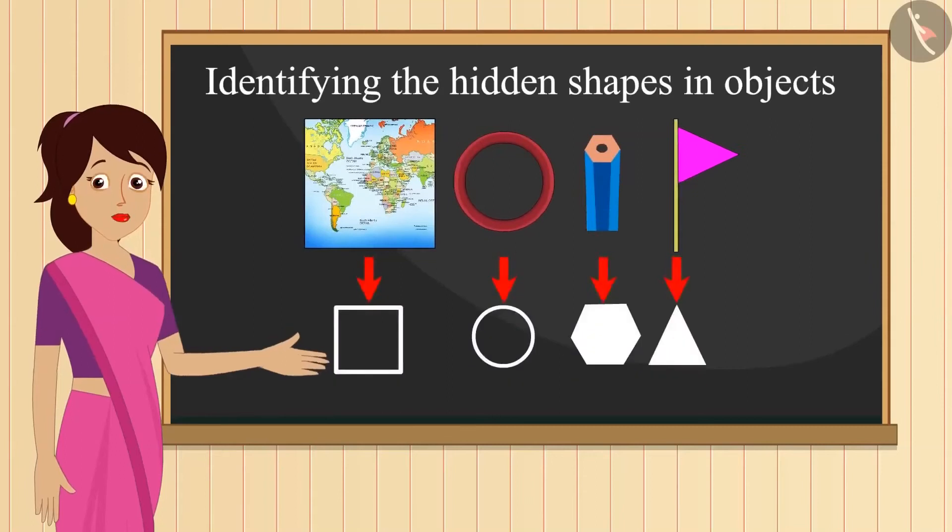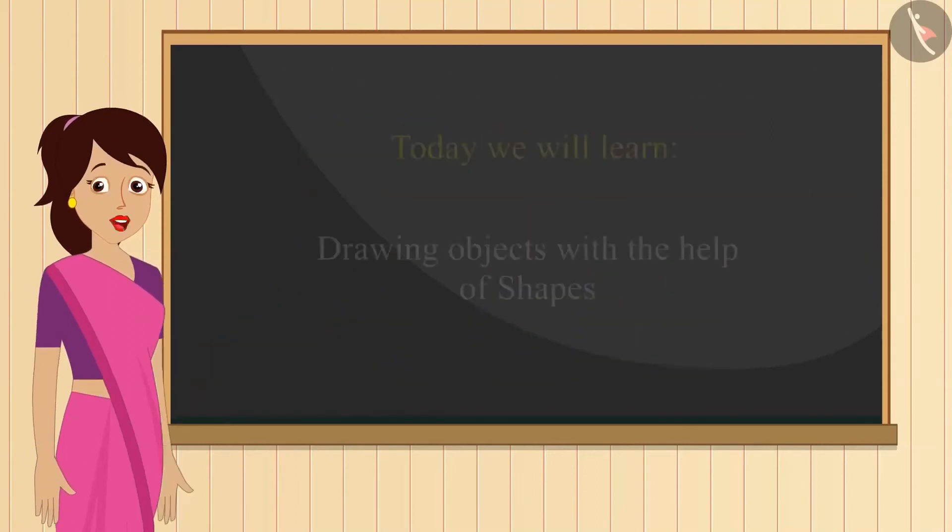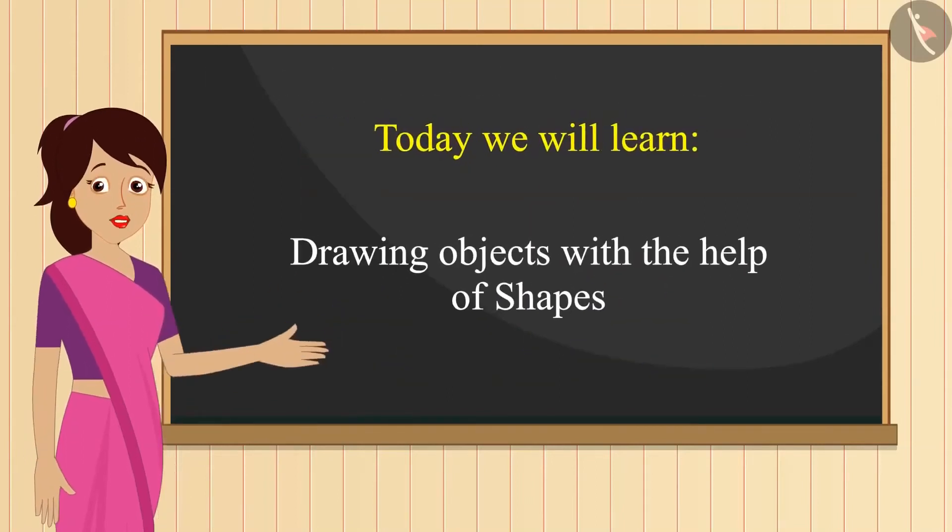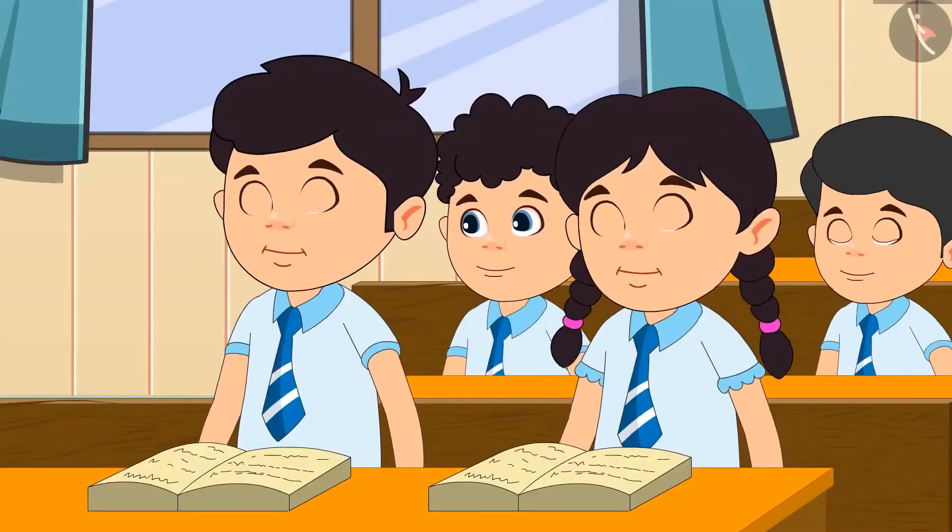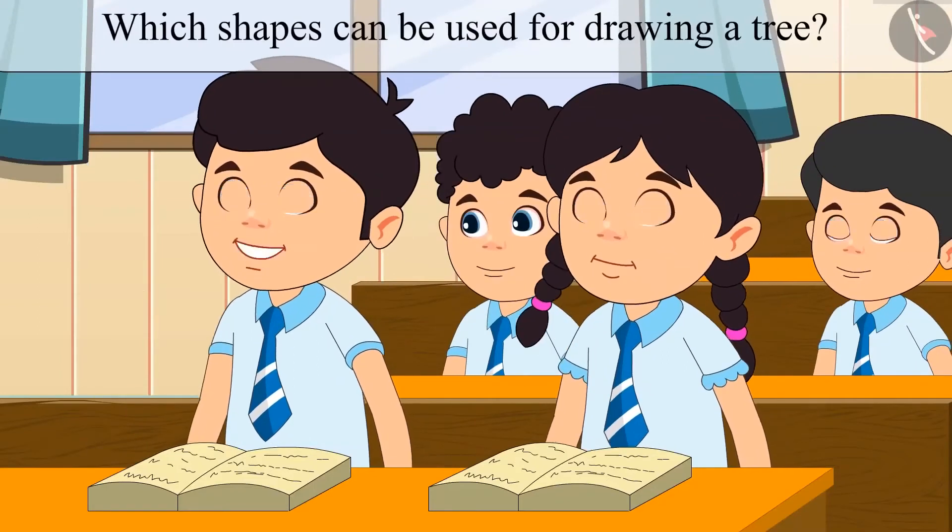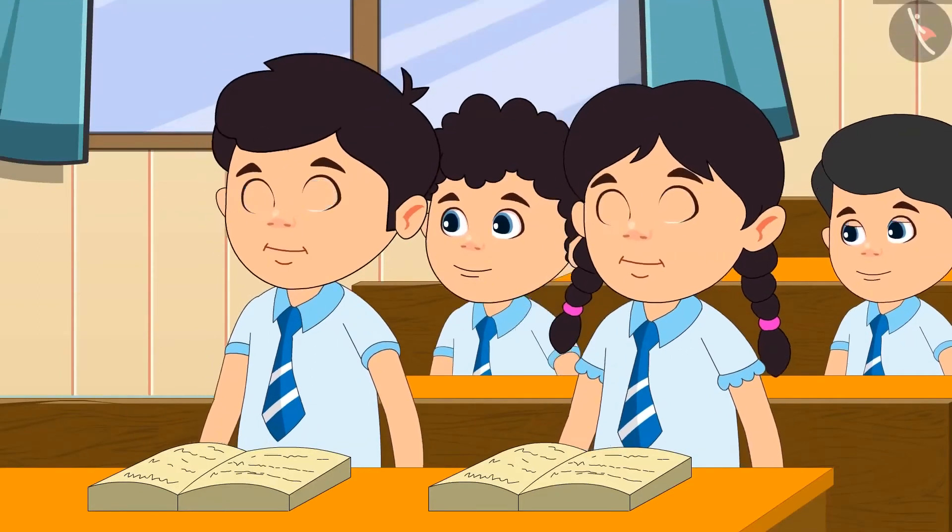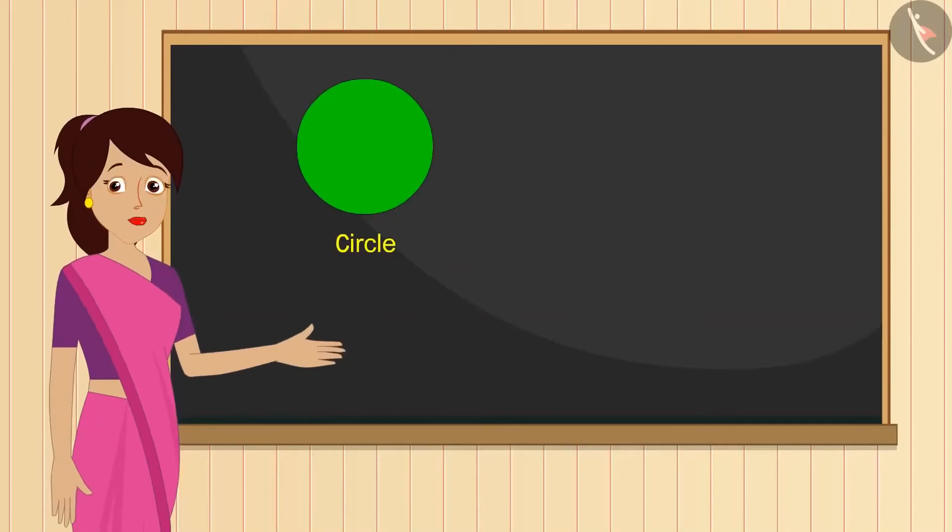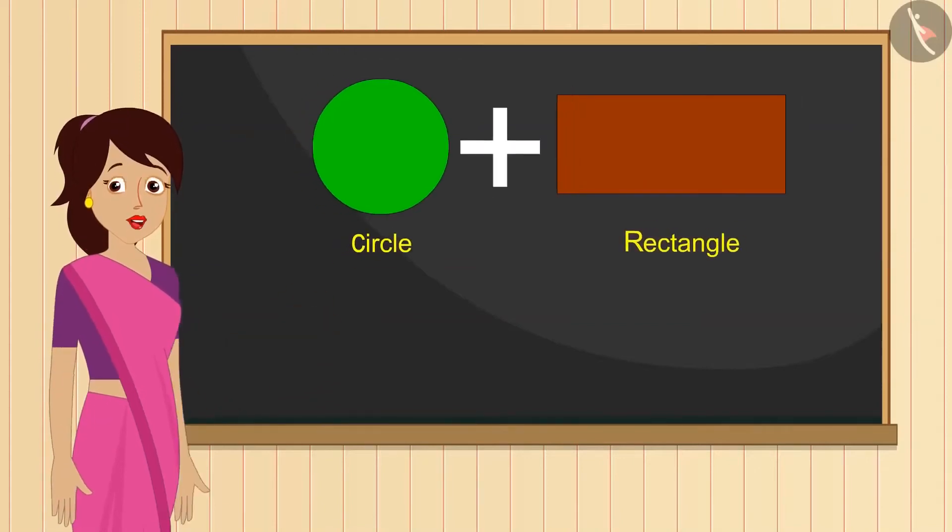Shapes! Hello children, do you remember that in the previous video I taught you to recognize the shapes of the objects? Today I will teach you to draw pictures of objects with the help of different shapes. Come, let's see what Ravi and Priya are making in their books. Teacher, if we want to draw a tree, then which are the shapes should be used? A tree can be made by joining the circle and rectangle.